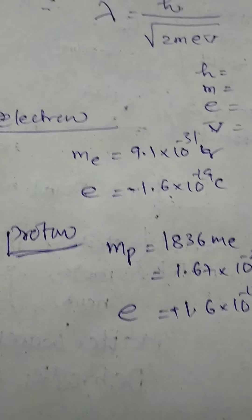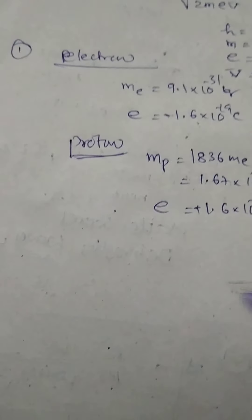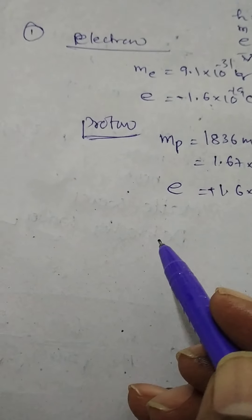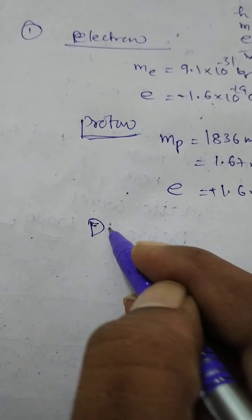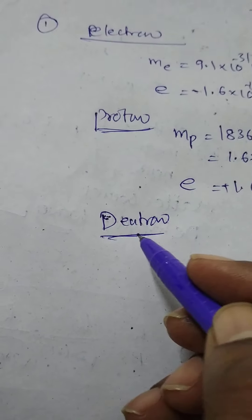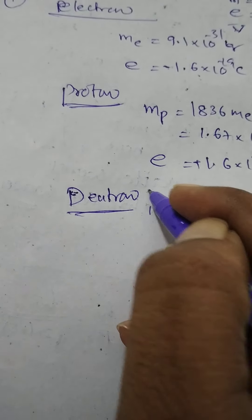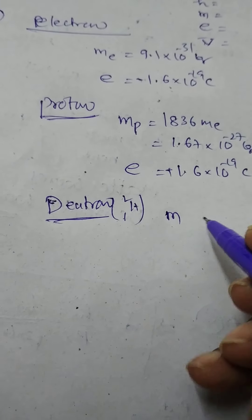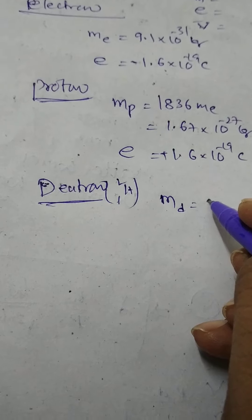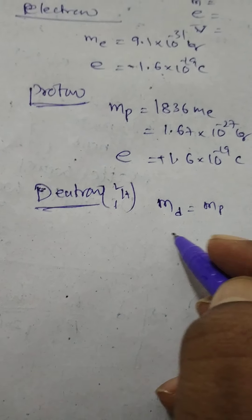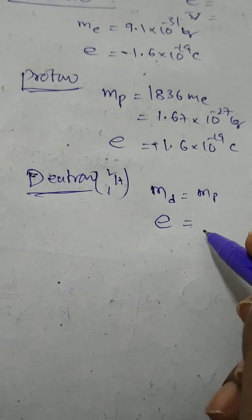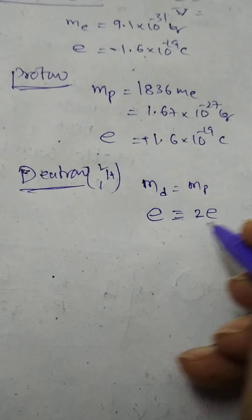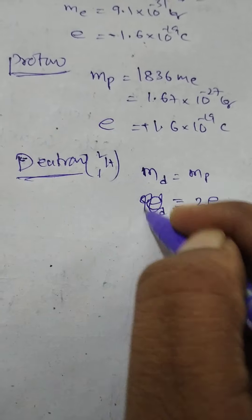The electron charge is negative and the proton charge is positive. For a deutron, H-1-2, there is one proton. Mass of the deutron is equal to mass of the proton. Charge on the deutron is equal to 2 times the charge on electron, which is 2e.